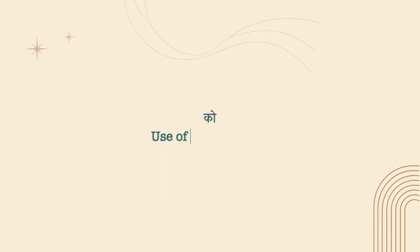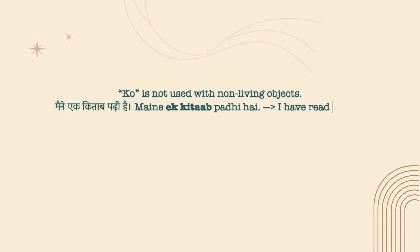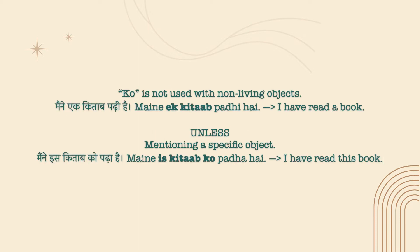Use of 'ko' in Hindi. Ko is not used with non-living objects. For example: 'Mainne ek kitab padhi hai' — I have read a book. However, unless mentioning a specific object, ko can be used: 'Mainne ek is kitab ko padha hai' — I have read this book.